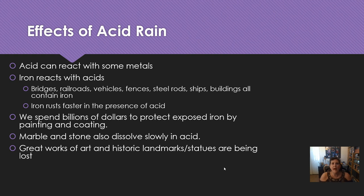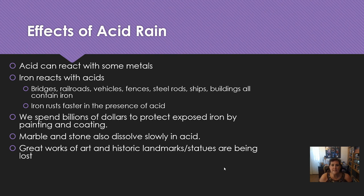The effects of acid rain: acid rain can react with some metals. Iron in particular reacts with acids, and we make bridges, railroads, vehicles, fences, steel rods, ships, and buildings out of iron. Iron will rust faster in the presence of acid. We actually spend billions of our tax dollars every year to protect iron that's exposed by painting and coating it. Marble and stone also dissolve slowly in acid, so gravestones become unreadable, and famous marble statues sitting outside slowly dissolve away, causing us to lose precious works of art and historic landmarks.